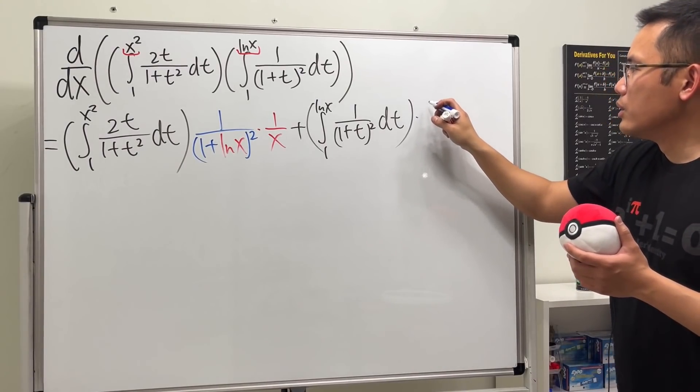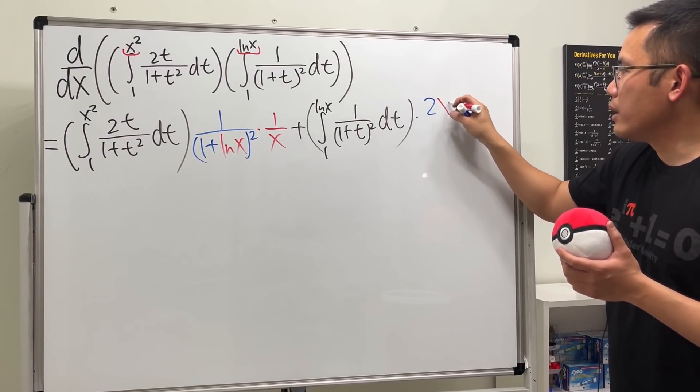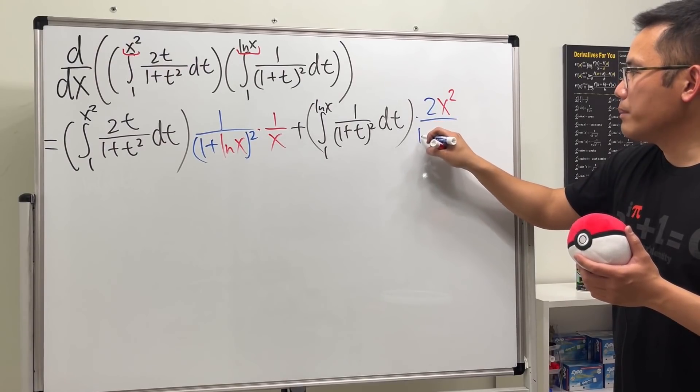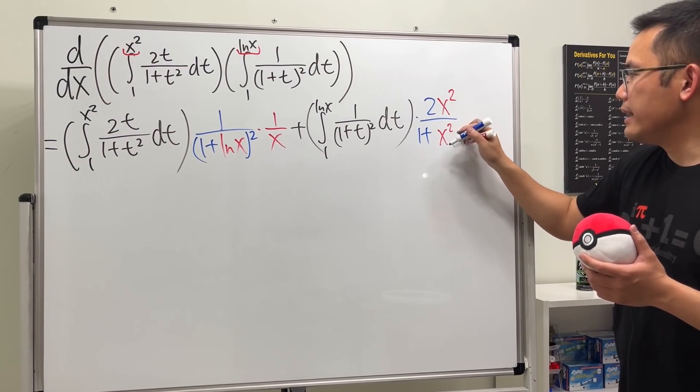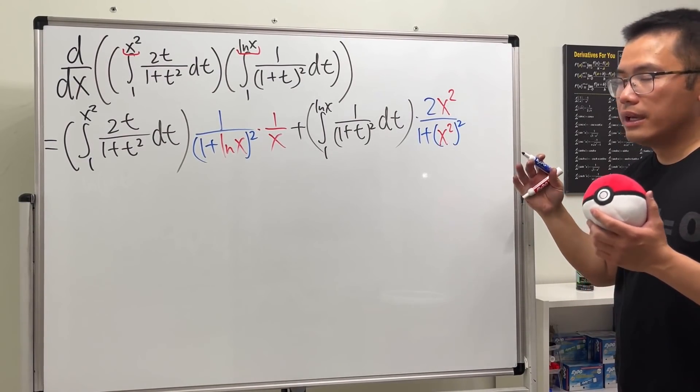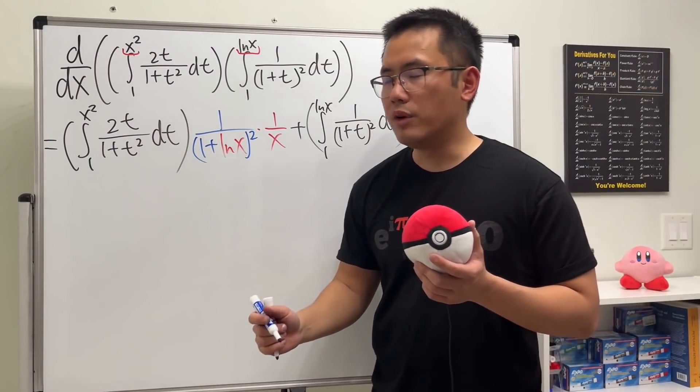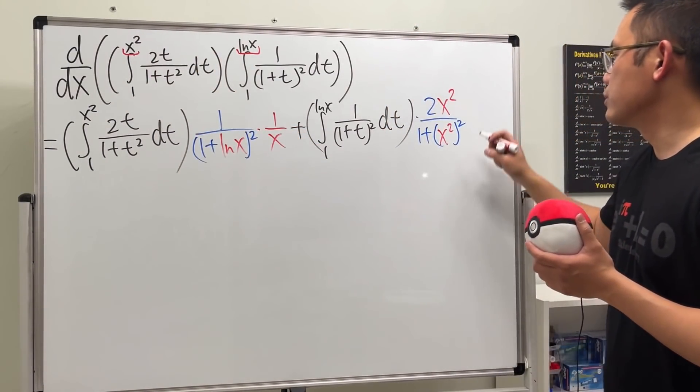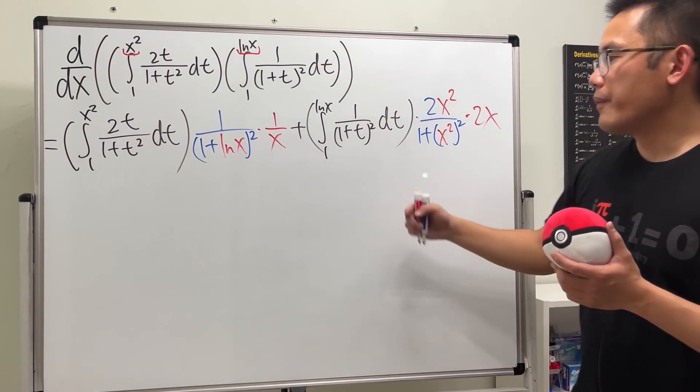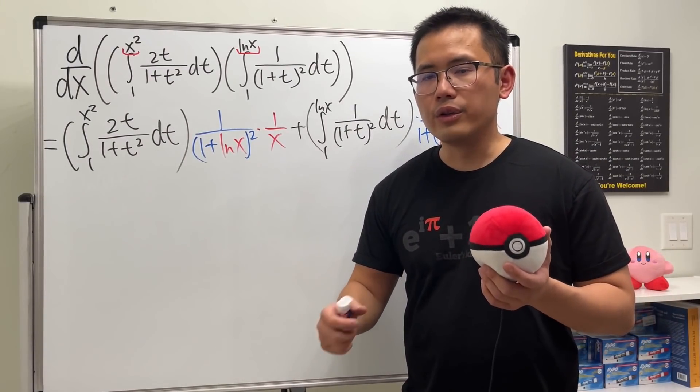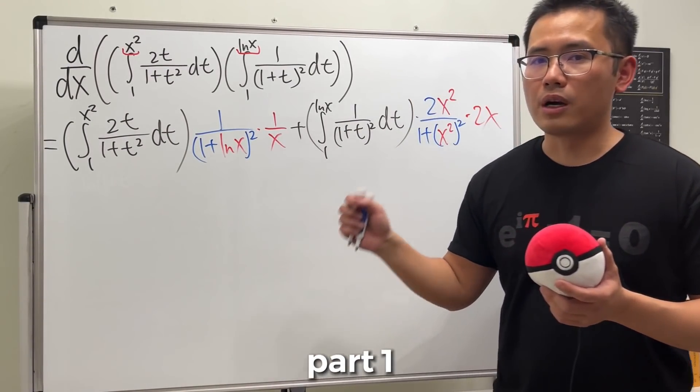So we are going to get 2 times x squared over 1 plus x squared, and then square, and then we have to multiply by the derivative of x squared, which is 2x. So when you do this, this is technically called the fundamental theorem of calculus part 1 along with the chain rule.